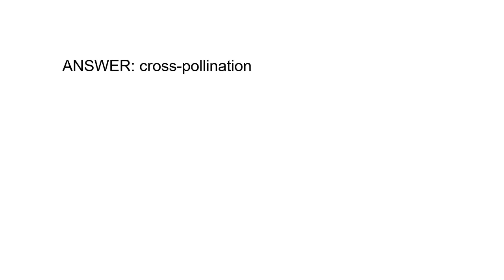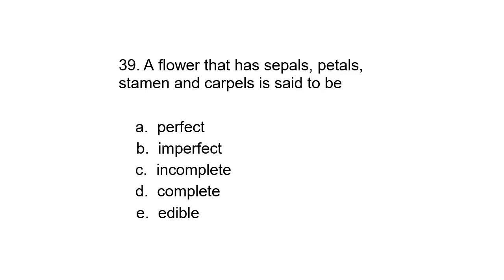Question 39. A flower that has sepals, petals, stamen, and carpels is said to be: A. Perfect, B. Imperfect, C. Incomplete, D. Complete, or E. Edible. The correct answer is Complete.